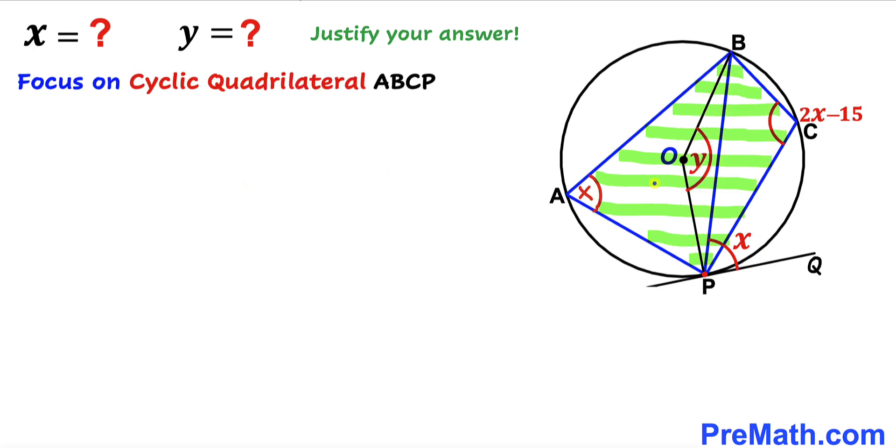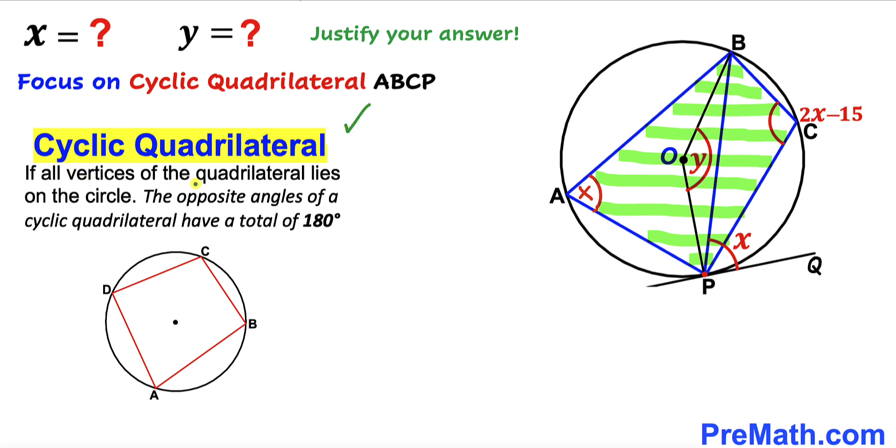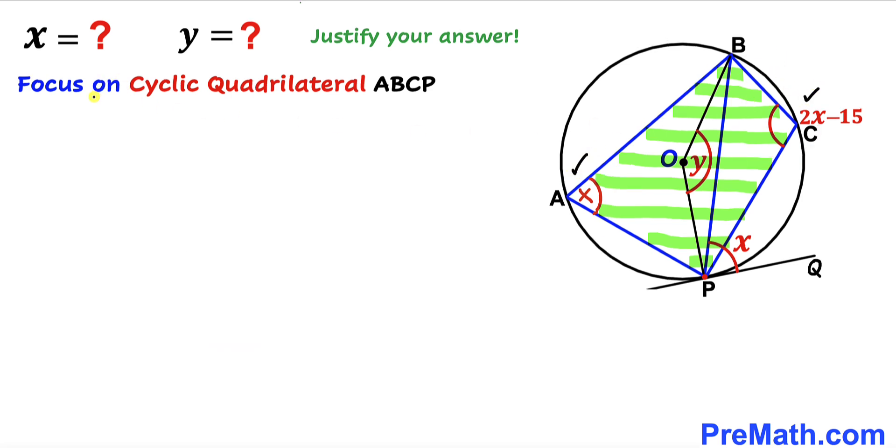Here's our next step. Let's focus on the cyclic quadrilateral ABCP. What is a cyclic quadrilateral? If all vertices of the quadrilateral lie on the circle, as you can see in this diagram, with vertices A, B, C, and P all on the circle, then the opposite angles have a total of 180 degrees. In our case, the sum of these two opposite angles must be 180 degrees.